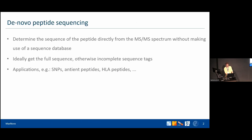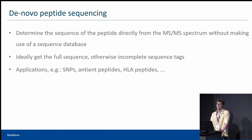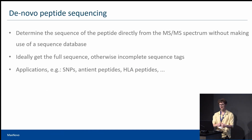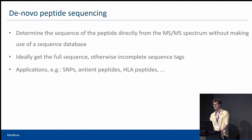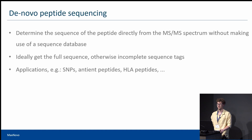What is the purpose of de novo sequencing in general? The purpose is that you want to retrieve a sequence from an MSMS scan without the use of a library. Ideally we want to get a full sequence, but whenever possible it is sufficient to get an incomplete sequence tag.